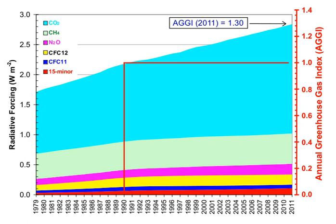The global warming potential depends on both the efficiency of the molecule as a greenhouse gas and its atmospheric lifetime. GWP is measured relative to the same mass of CO2 and evaluated for a specific timescale. Thus, if a gas has a high radiative forcing but also a short lifetime, it will have a large GWP on a 20-year scale but a small one on a 100-year scale. Conversely, if a molecule has a longer atmospheric lifetime than CO2, its GWP will increase when a longer timescale is considered. Carbon dioxide is defined to have a GWP of 1 over all time periods.